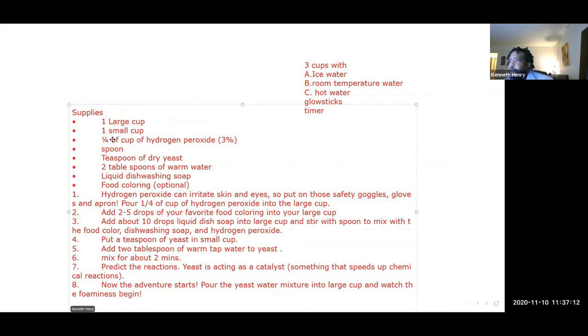A large cup, a small cup, you're going to need a fourth of a cup of hydrogen peroxide, a spoon, dry yeast, two tablespoons of warm water, liquid dishwashing soap, and food coloring.